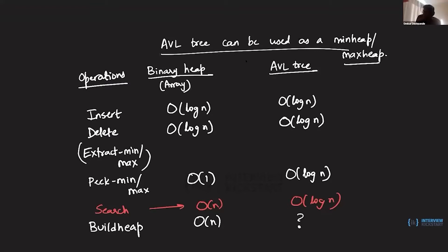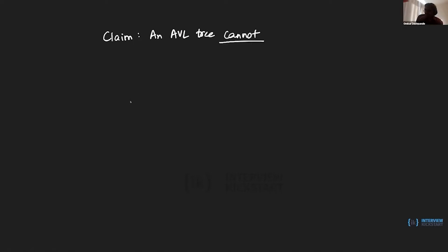Suppose we wanted to use an AVL tree as a heap — which is useful for those who don't have a priority queue library in their programming language. Can build heap be done in O(n) time using an AVL tree? The answer is no: an AVL tree cannot implement the build heap operation in O(n) time.